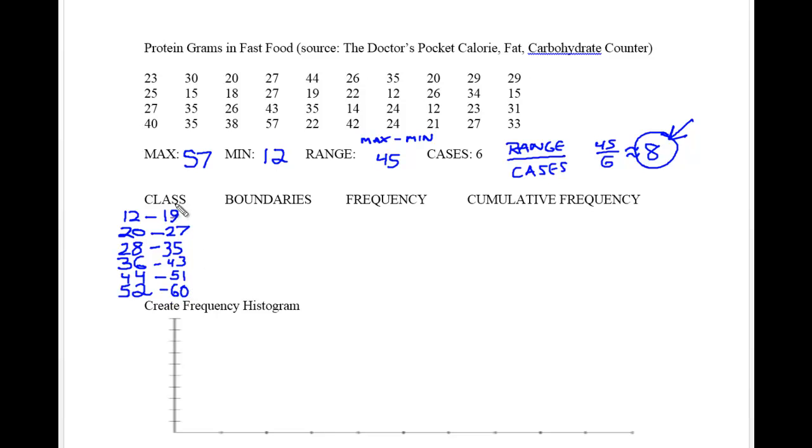Class can have no overlap, but boundaries should, and boundaries go one extra decimal, five below and five up. Going down from 12 one decimal would be 11.5, and going up from 19 would be 19.5. Then 19.5 to 27.5, so round down, round up. There's going to be no overlap. This rounds up to 35.5, then 35.5 to 43.5, 43.5 to 51.5, 51.5 to 60.5.